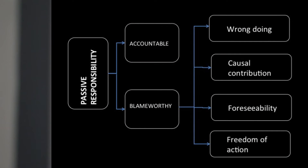Foreseeability is the third criterion, where the person held responsible must have been able to foresee the consequences of their actions. The final criterion for blameworthiness is freedom of action. If you are held responsible for an action, you must have been free to take that decision — in other words, you must not have acted under coercion.